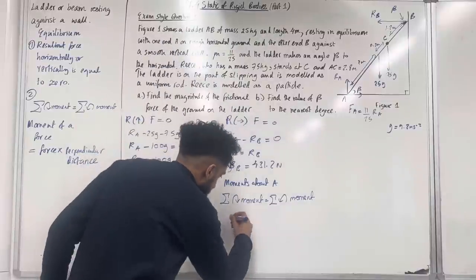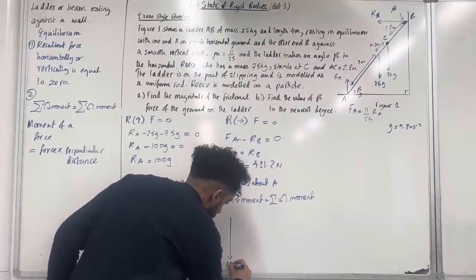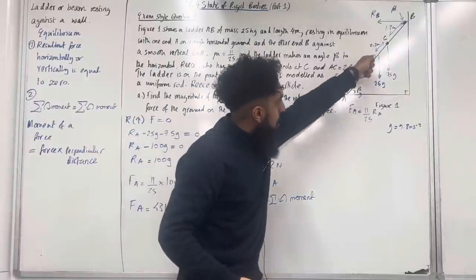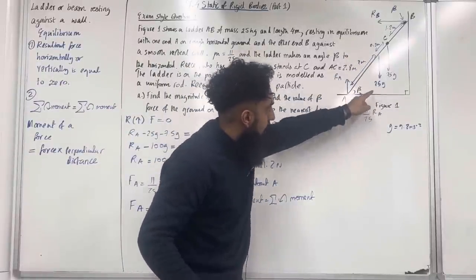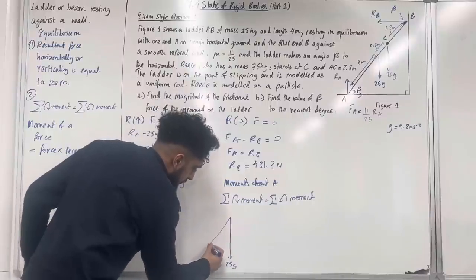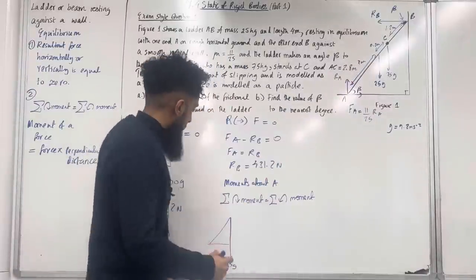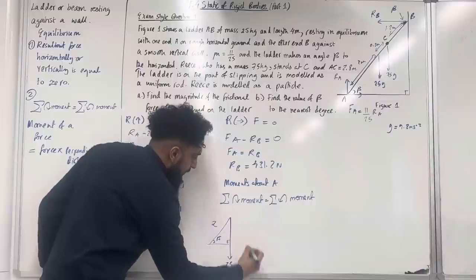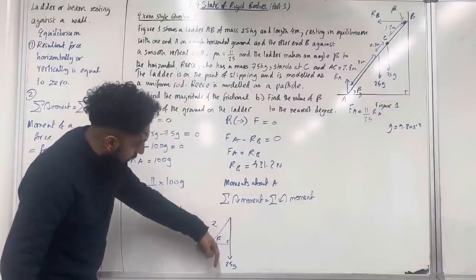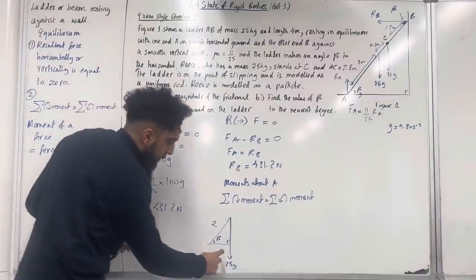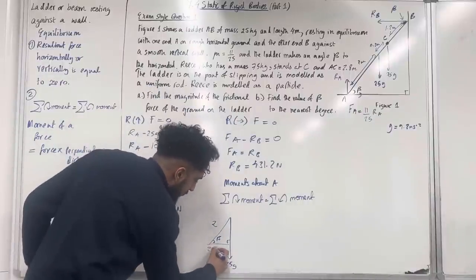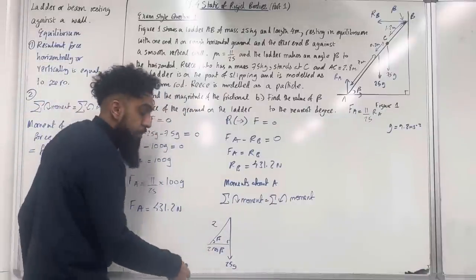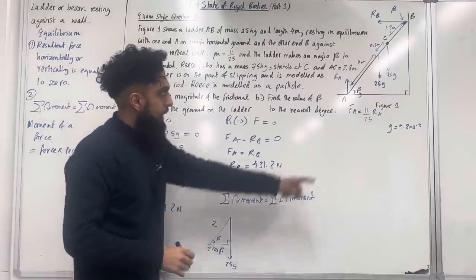To calculate the moment of the 25g force I draw a right-angle triangle: the distance along the ladder is 2 metres and the angle at A is beta. The perpendicular distance to the force is the adjacent side, which is 2 cos β.